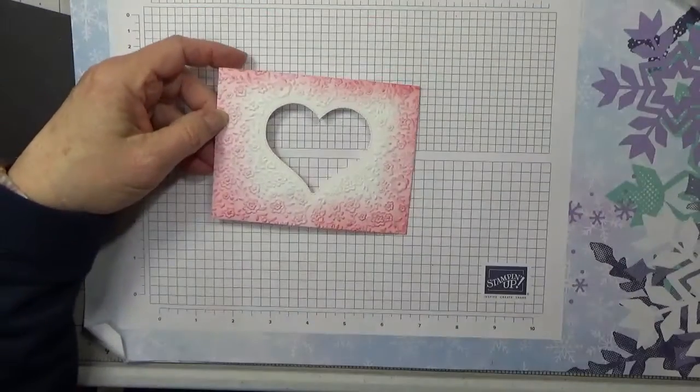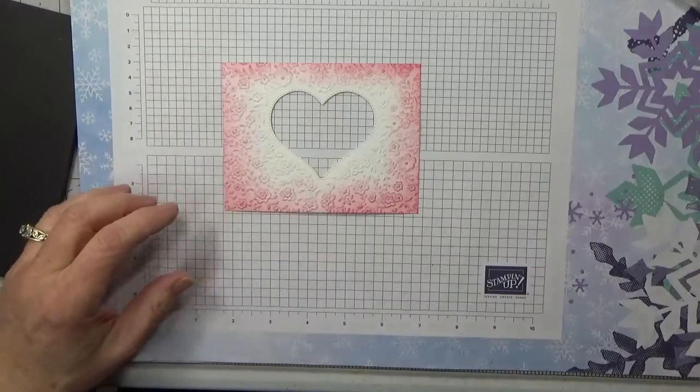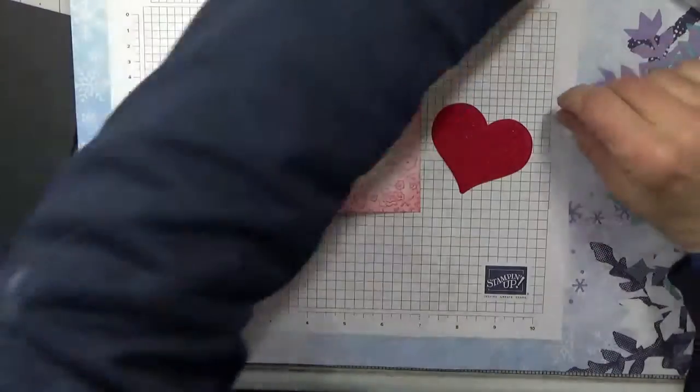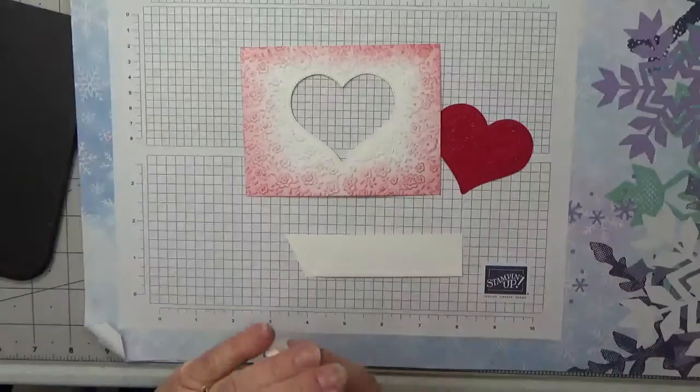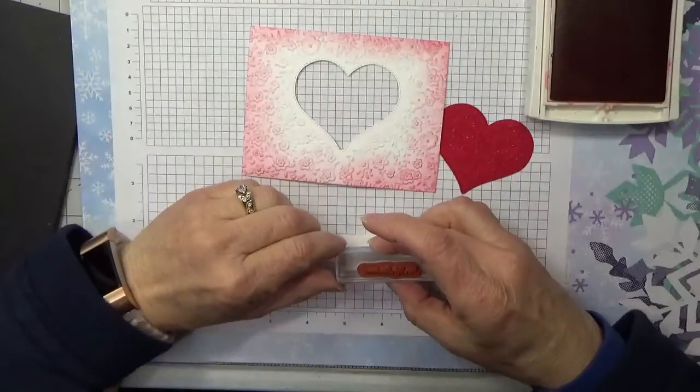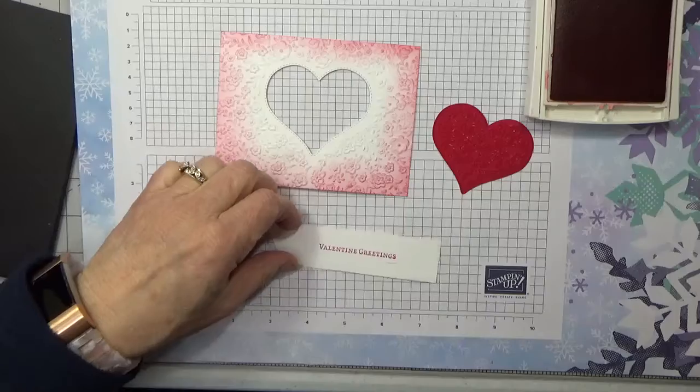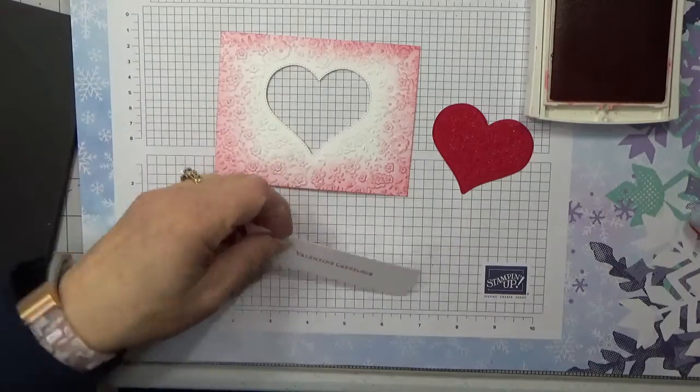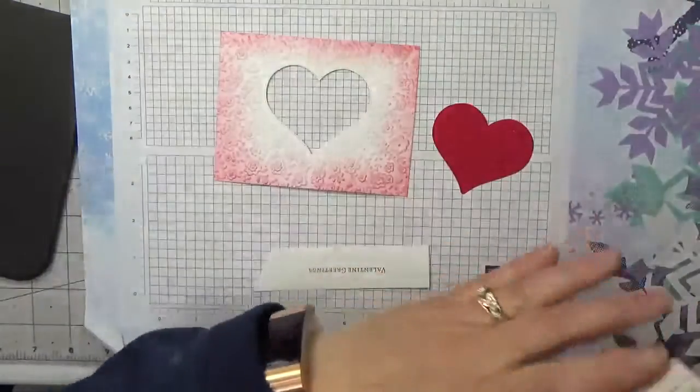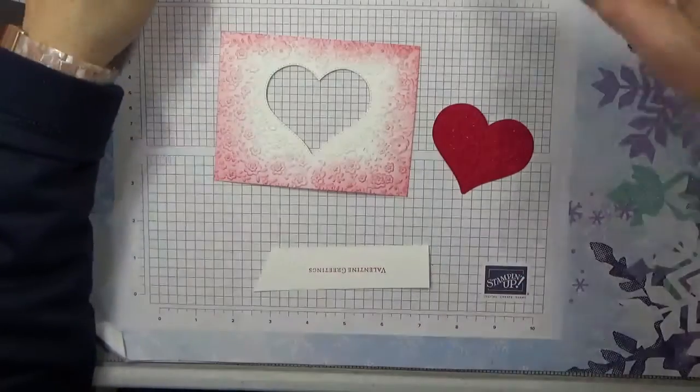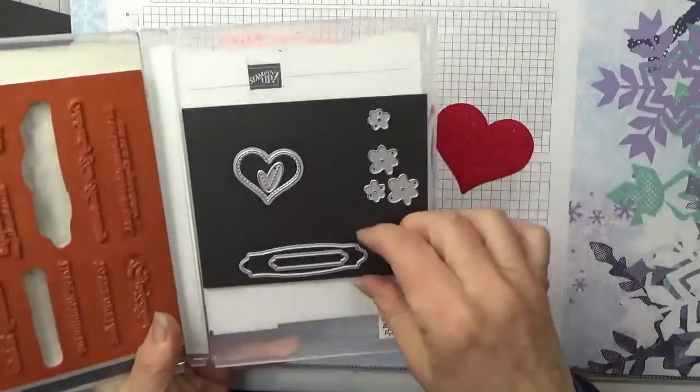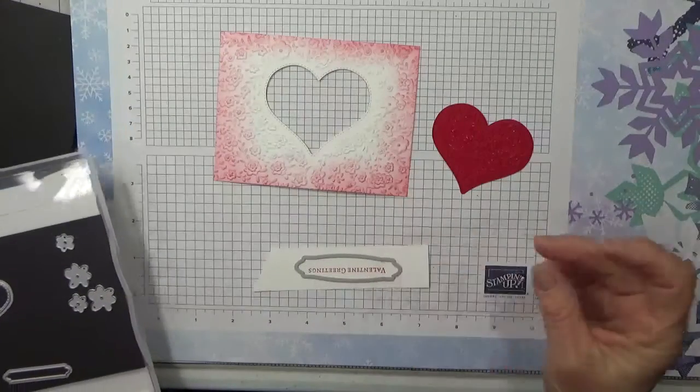And here's our heart. I'm going to stamp my greeting on here. I'm just going to put Valentine's greetings just like that. And I think I'm going to have to turn that over because I got a little... there we go. Always remember there's two sides to every sheet of cardstock. And then I'm going to take this piece out of my die set and cut that out, and I'll be right back.